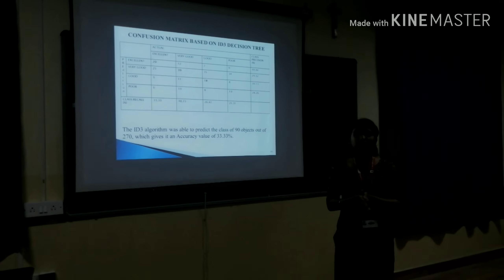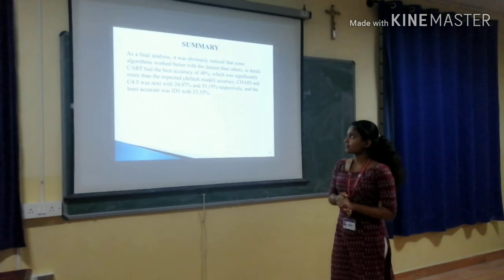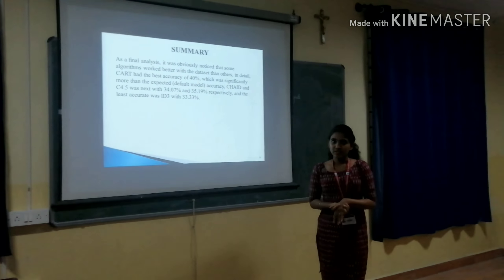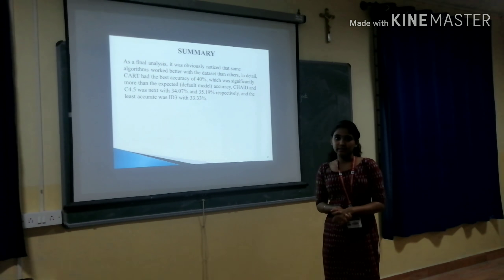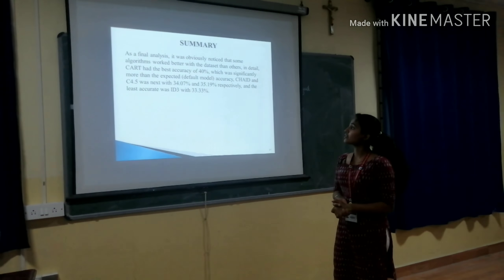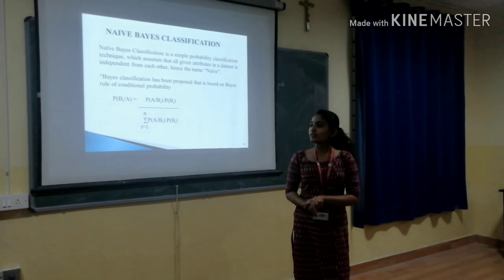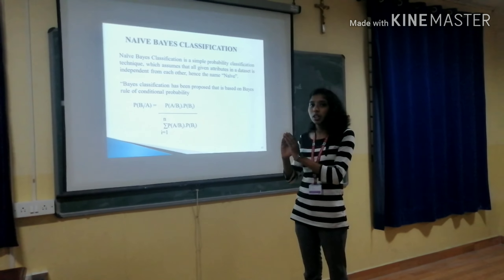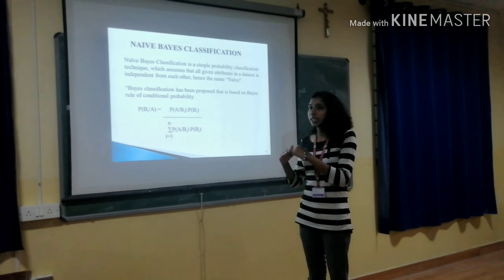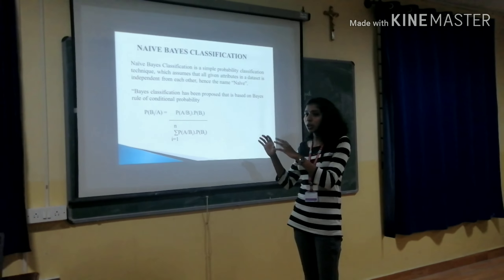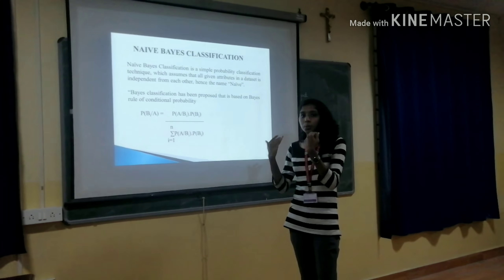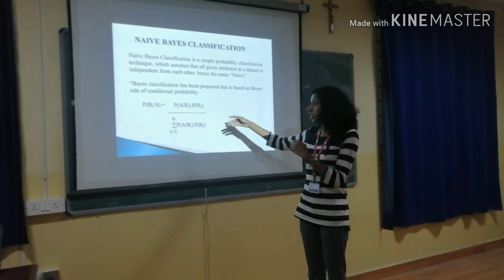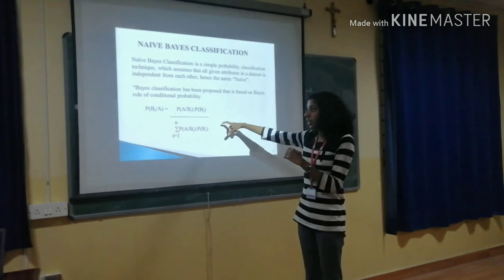C4.5 predicted the class using 95 objects out of 270, with an accuracy value of 34.95%. The ID3 algorithm used 90 objects and achieved 33.33%, which is the least. In final analysis, the CART algorithm achieved the best accuracy of 40%, and ID3 was the least at 33.33%. And next my friend will continue.